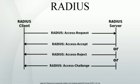The RADIUS packet data format fields are transmitted from left to right, starting with the code, the identifier, the length, the authenticator, and the attributes. RADIUS codes are assigned as follows. The identifier field aids in matching requests and replies. The length field indicates the length of the entire RADIUS packet including the code, identifier, length, authenticator, and optional attribute fields. The authenticator is used to authenticate the reply from the RADIUS server and is used in encrypting passwords. Its length is 16 bytes.